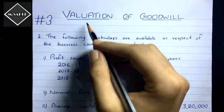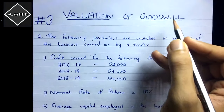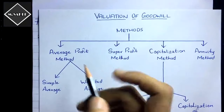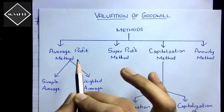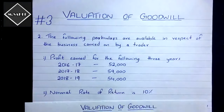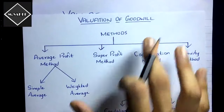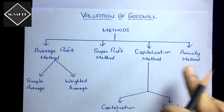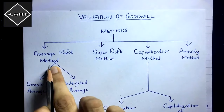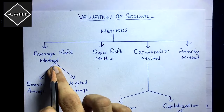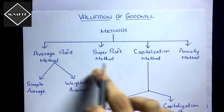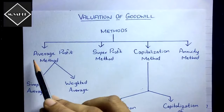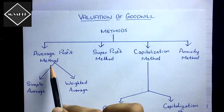Hi everyone, this is the third video of the Valuation of Goodwill chapter. In the previous two videos we covered the concept of goodwill and solved a problem with the average profit method. To understand the super profit method properly, you must know the average profit method, so I recommend watching the previous video first.